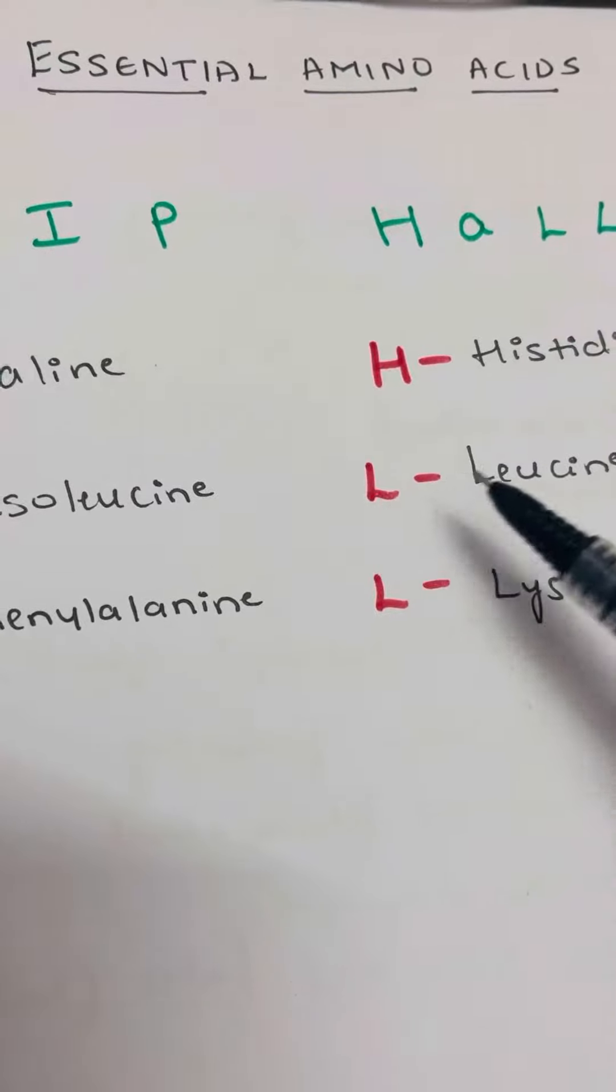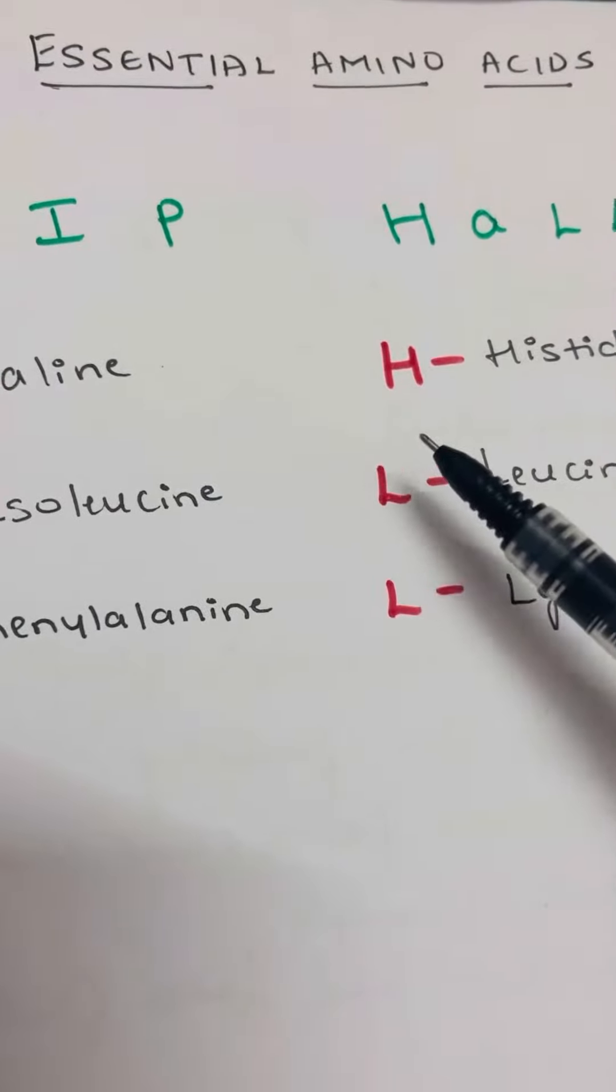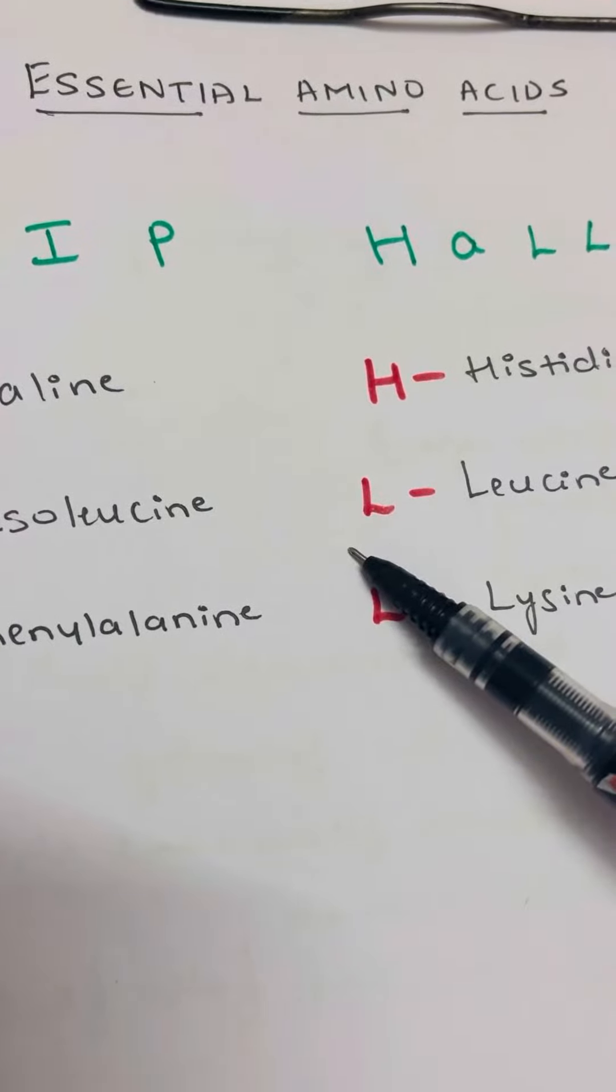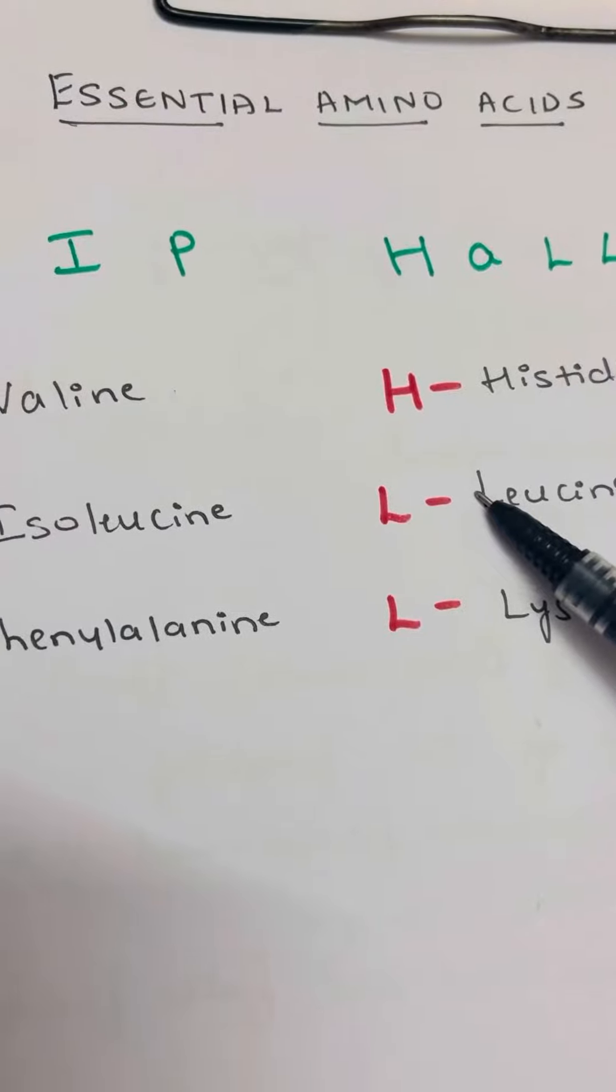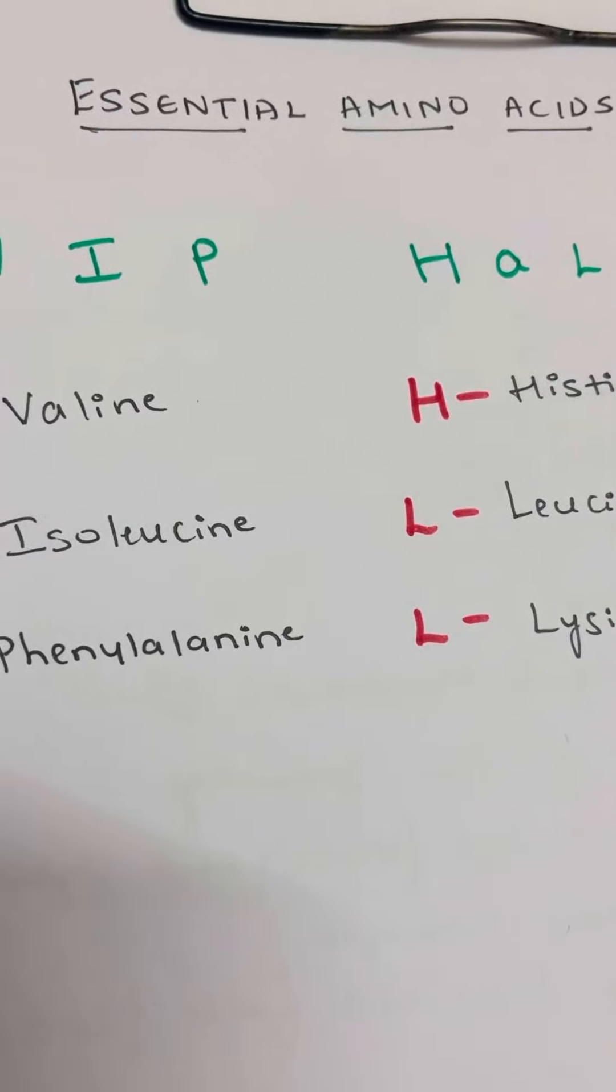There are two types of amino acids: essential and non-essential amino acids. Essential amino acids are the ones which cannot be synthesized by our body but must be taken in diet.